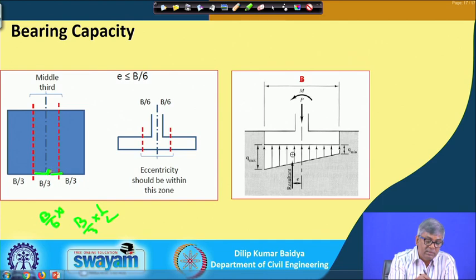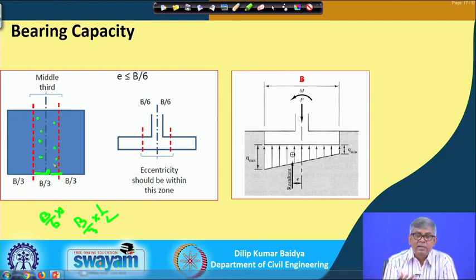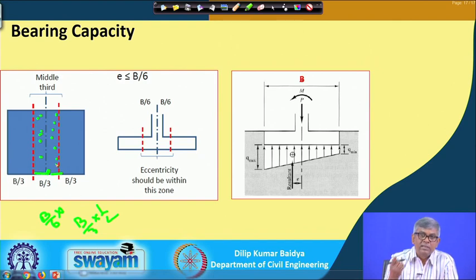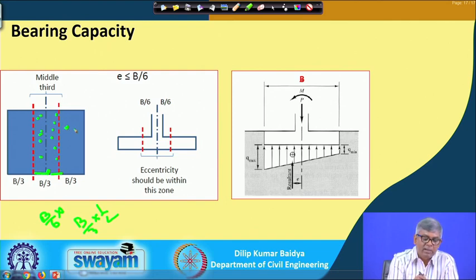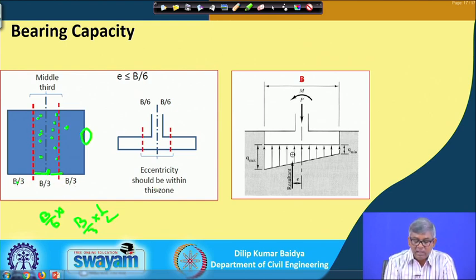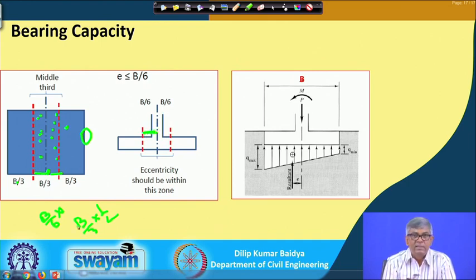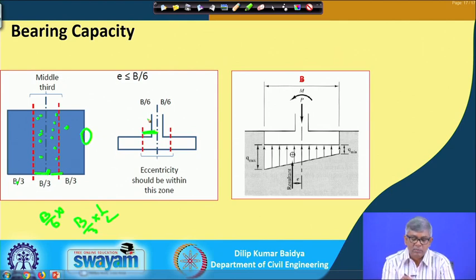If this is the footing, you have to apply the load within the middle third zone so that pressure below the footing is always non-negative, since we generally do not accept tension below the footing. If loading is anywhere in this zone, one side will be zero and the other side will be maximum. When loading crosses this boundary, there will be tension on one side and excessive compressive load on the other. So eccentricity should be within B/6 — maximum eccentricity is B/6.